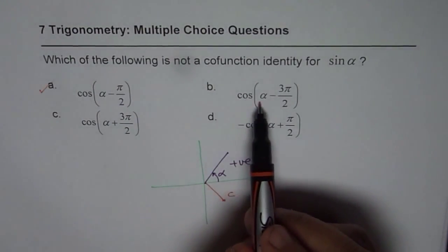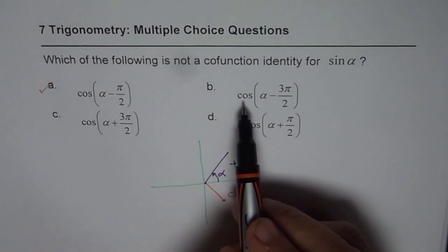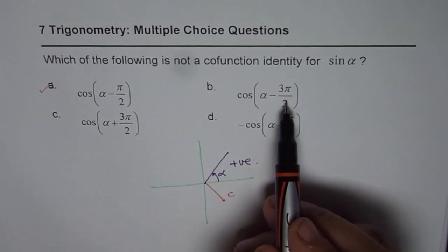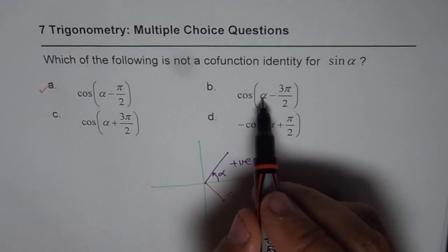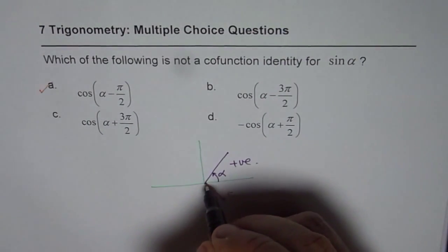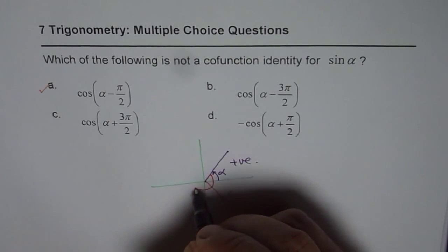Let us look into the next one, which is cos(α - 3π/2). Now, when I say cos(α - 3π/2), then we are going in this direction, right there.